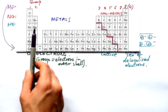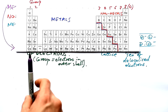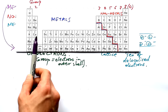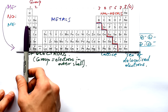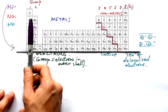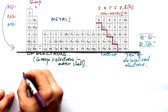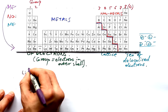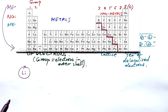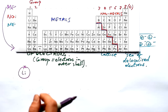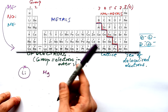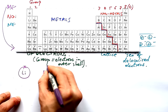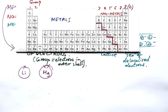When we look at ionic bonding, we're generally looking at elements in groups one and two: lithium, beryllium, sodium, magnesium, potassium, and calcium. How many electrons does lithium have in its outer shell? Well, it's in group one, so it has one. I'm going to draw just its outer shell. Magnesium is in group two, so it has two electrons in its outer shell. I don't need to draw the inner shells — that's a nice little shortcut.